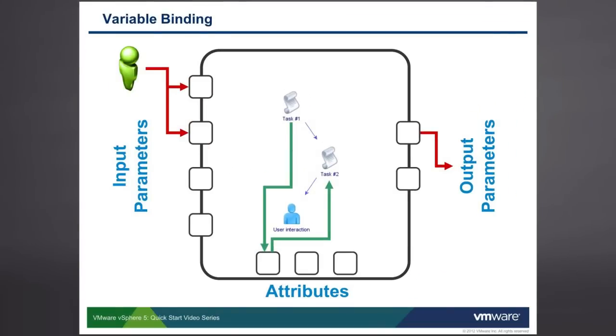The third type of variable that we introduced a few moments ago are called attributes. Unlike input parameters and output parameters which are used to pass information in and out of a workflow, attributes exist solely within the workflow itself. Attributes are used to pass information between different schema elements in a workflow. As you can see here, we've set up a write or an outward bound variable binding from task number one to our attribute.